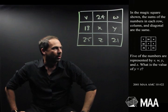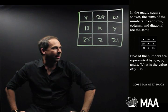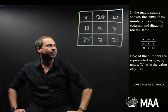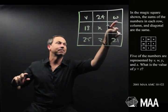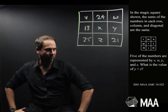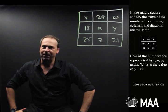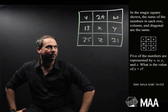Five of the numbers represented by V, W, X, Y and Z. Five of the numbers are represented by these. So my magic square has some unknown spots in it. What is the value of Y plus Z?